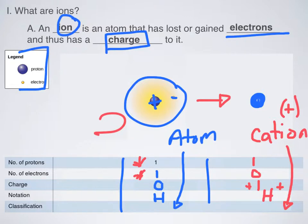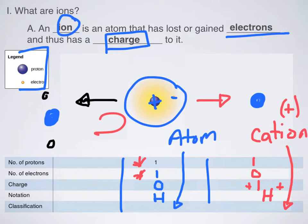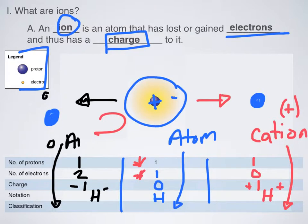But we can do the opposite. Over here on the left-hand side, let's draw the relationship of gaining electrons instead. I have my proton in the middle, and now I have two electrons instead of just one. Now let's count again: I have one proton, I have two electrons, so my charge would be a minus one. How would I note that? It's still hydrogen, but it's not a hydrogen atom — it is an ion. So I have H with a minus one. We call that an anion, and that means it has a negative charge.